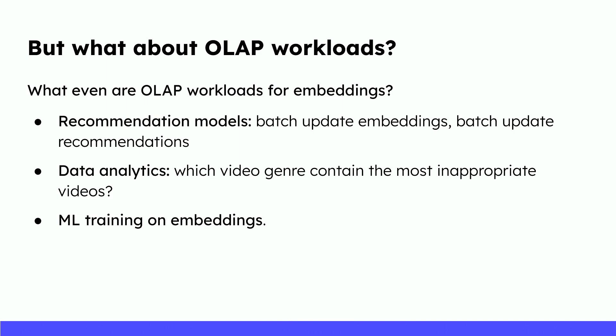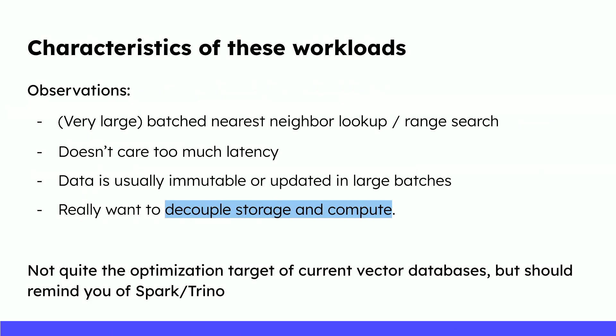There are other workloads like data analytics or machine learning training on embeddings, where you train XGBoost to predict business metrics. The characteristics of these workloads are that they typically involve very large batch nearest neighbor searches — not a single query vector, but typically because we updated our embedding model, maybe switching from GPT-3.5 to GPT-4. We just updated all our embeddings and want to recompute everything. We don't care too much about latency — this isn't critical in-line business serving — but we do care about cost. We really want to decouple compute and storage here, pay on demand, and spin up temporary clusters to do this, just as lake house architecture would allow.